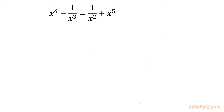Welcome back to InfiJarn friends. In this video we are going to take up one very interesting algebraic challenging equation which is nonic in nature: x^6 + 1/x^3 = 1/x^2 + x^5. We have to find out overall 9 solutions. I will demonstrate two methods — Method 1 using algebra, and Method 2 using complex numbers. I will begin with the domain of the equation: x cannot be equal to 0.